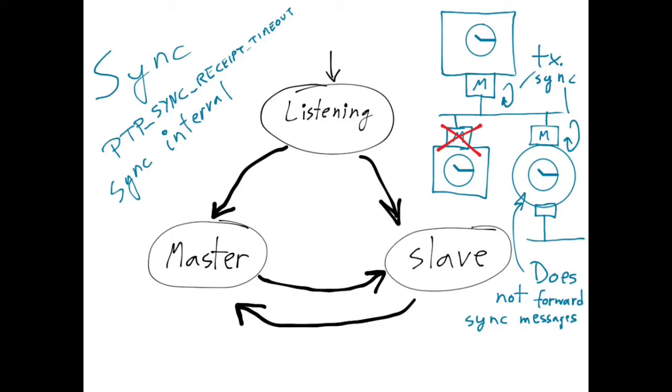So they would both start to transmit sync messages now. These sync messages would convey information about the quality of the respective clock, and thus one port would detect that it belongs to a better clock, while the other port would detect that it belongs to a worse clock.